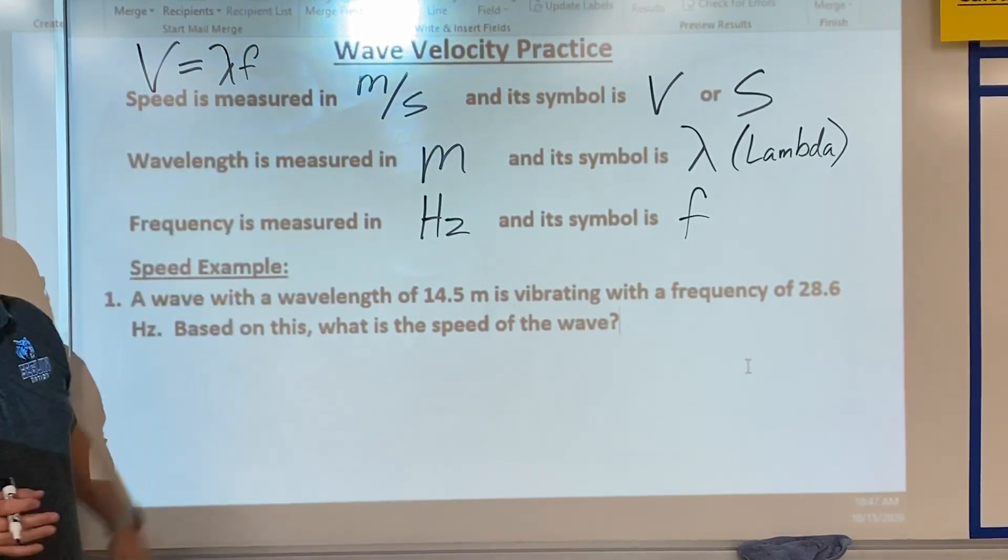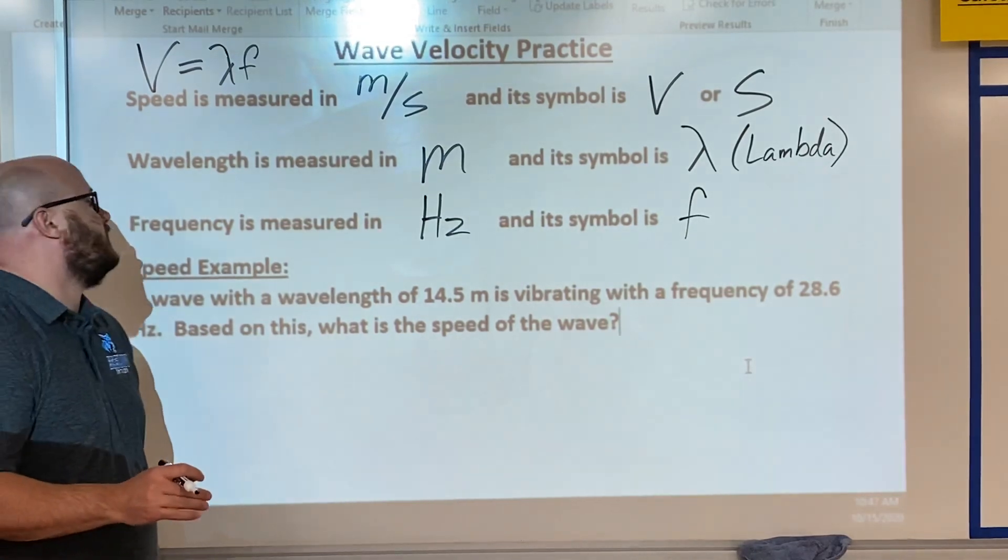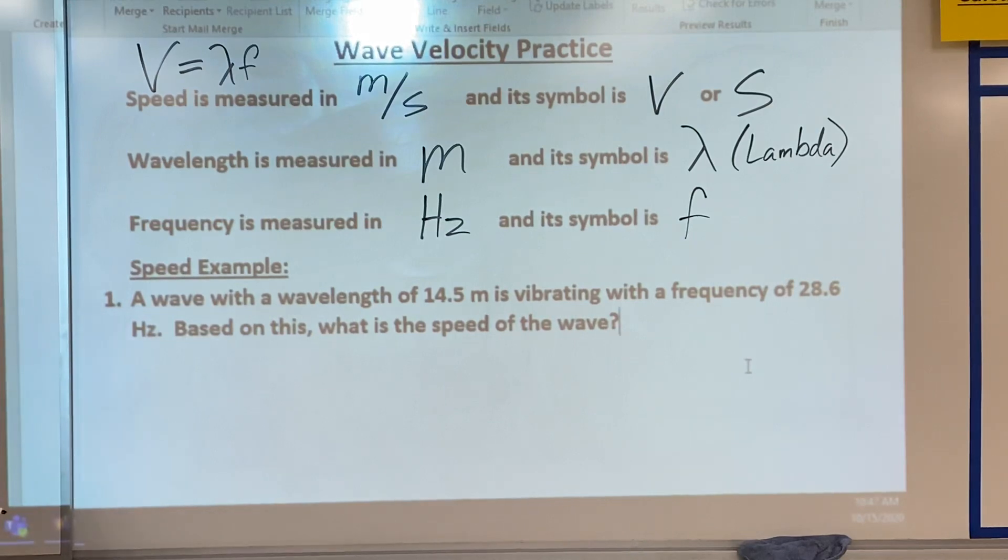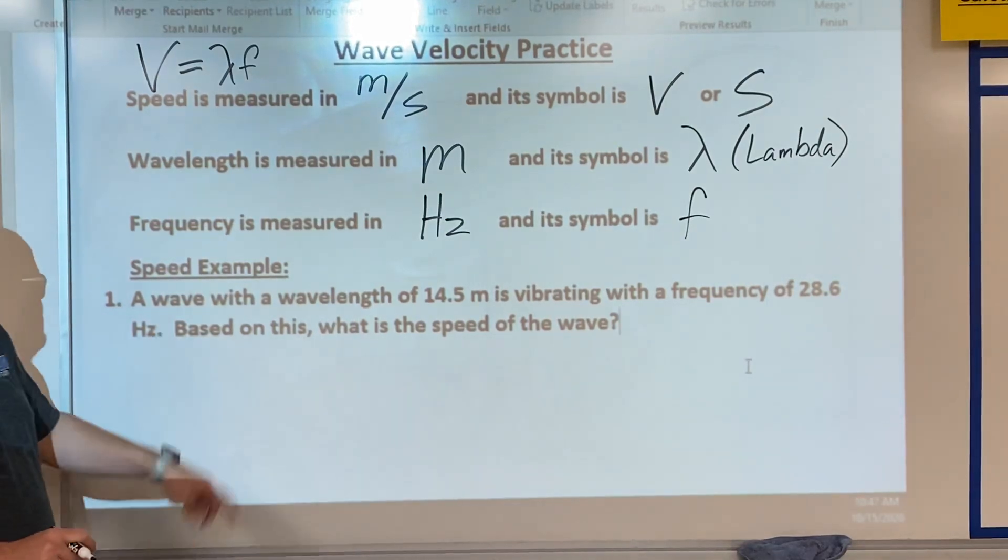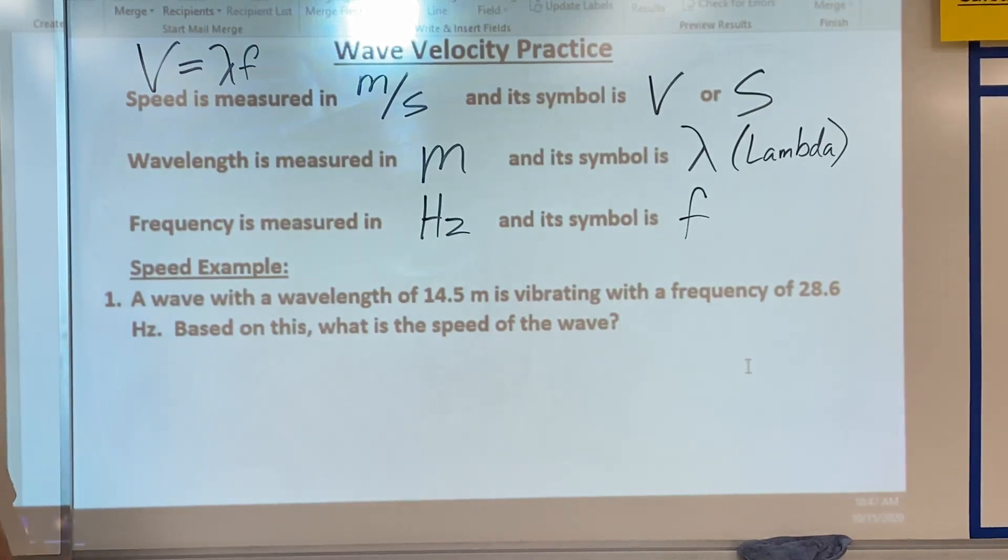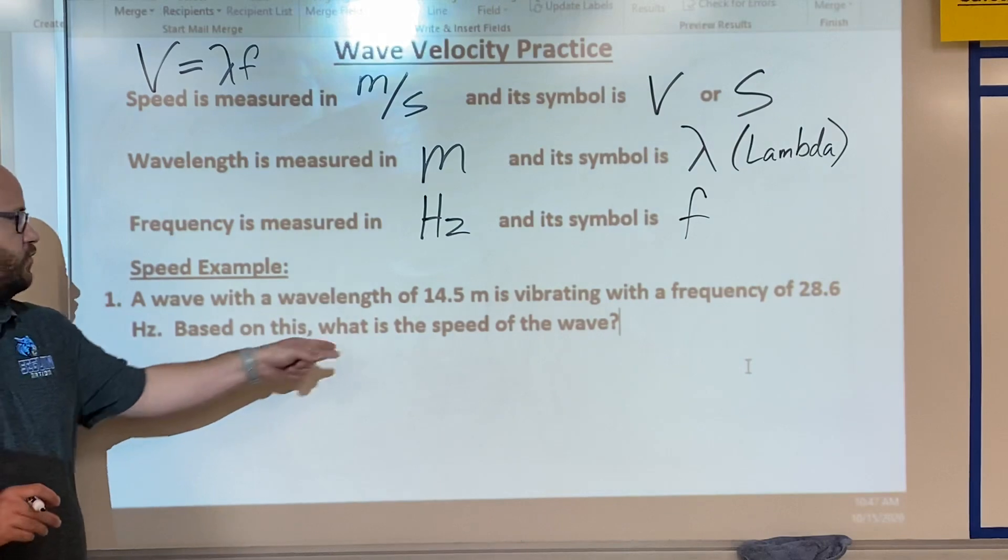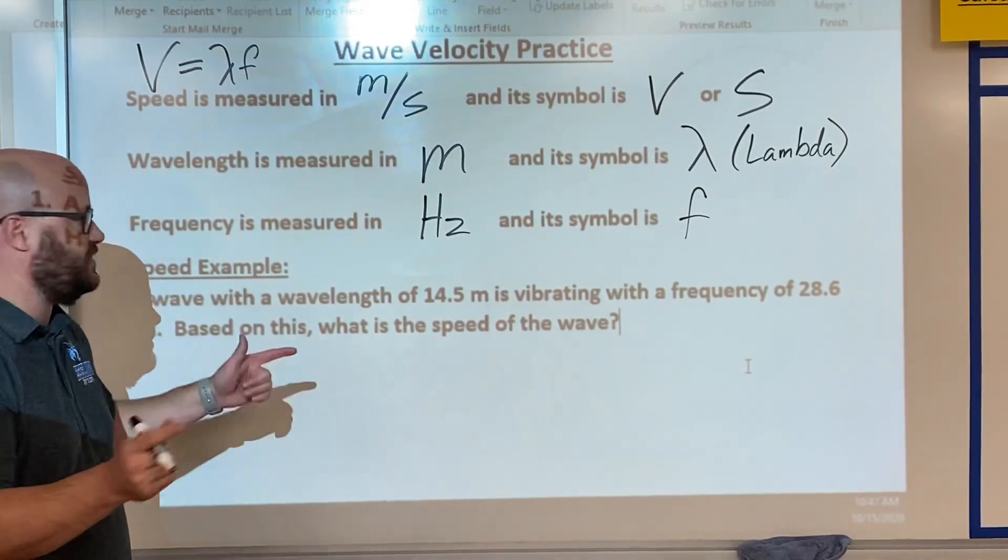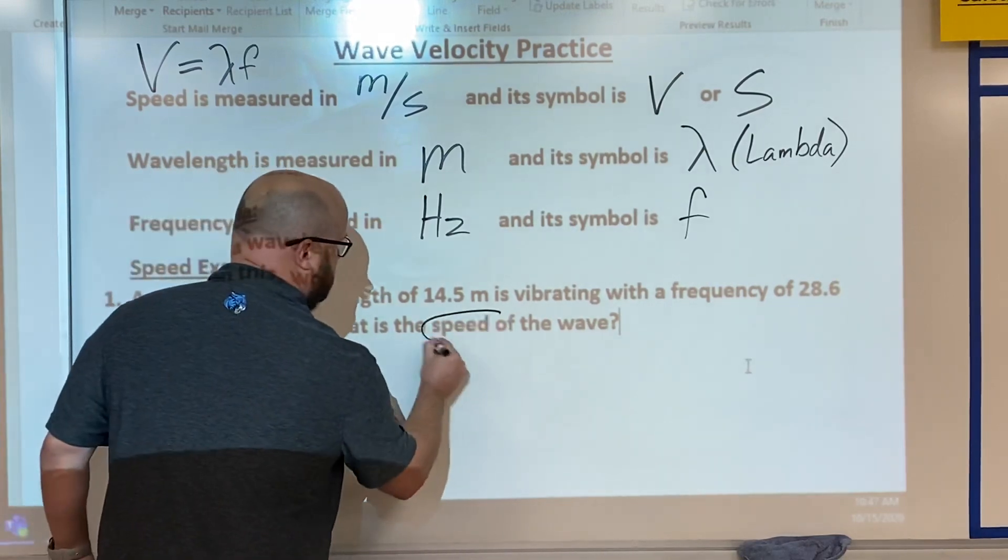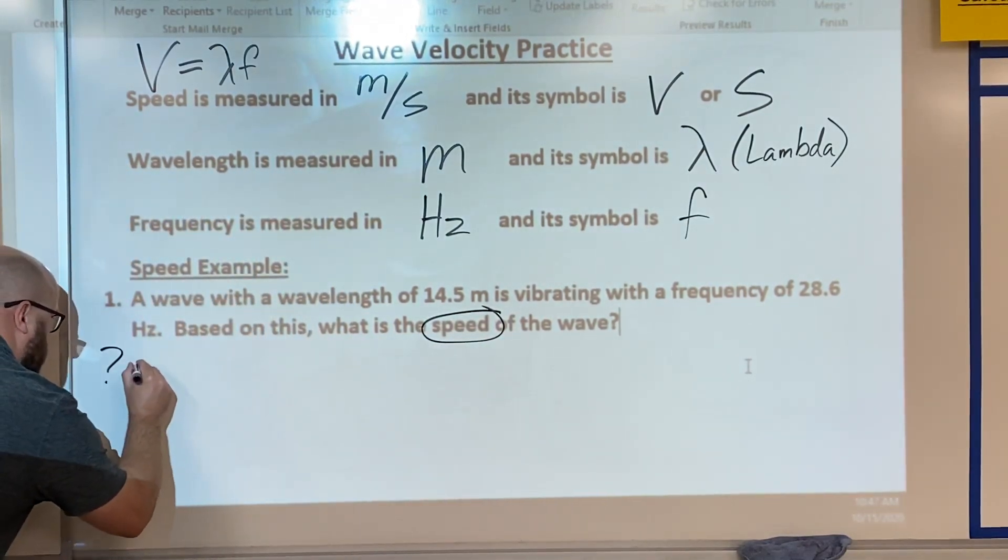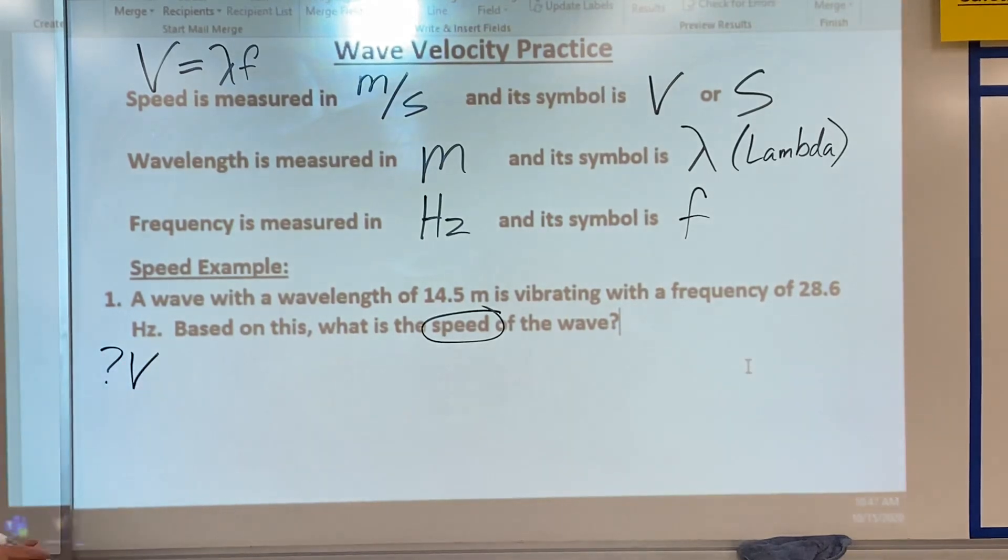That formula is simply V equals wavelength times frequency, or lambda frequency, simple as that. Let's look at the first example. This is a speed example. The question says a wave with a wavelength of 14.5 meters is vibrating with a frequency of 28.6 Hertz. Based on this, what's the speed of the wave?